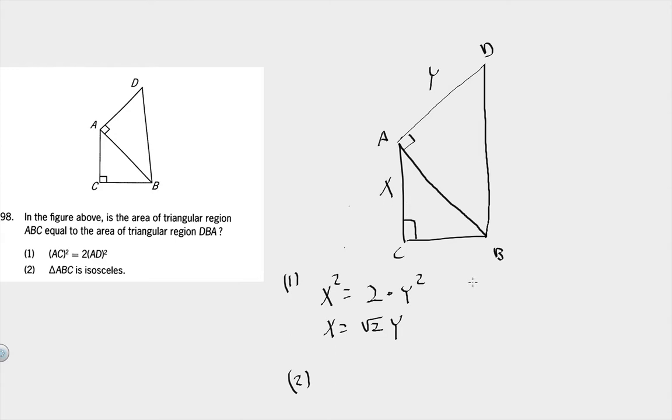I would test special triangles here. I'd try a 45, 45, 90, and I'd try a 30, 60, 90. So let's say that we make Y equal to 1. We're just using easy numbers. That means that X would be root 2.